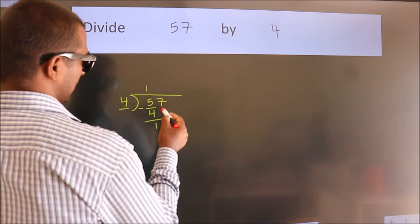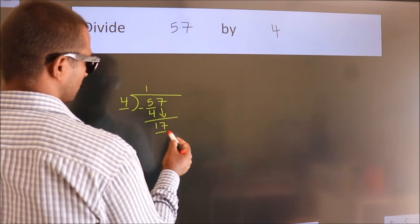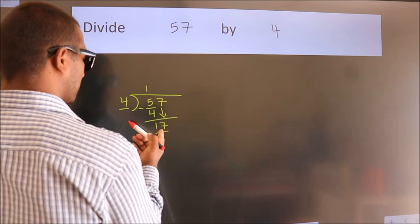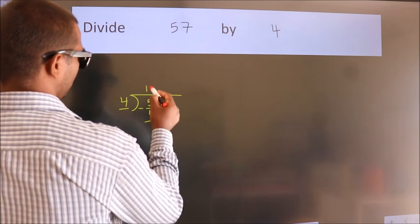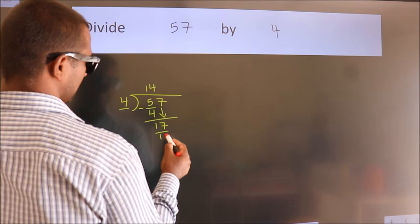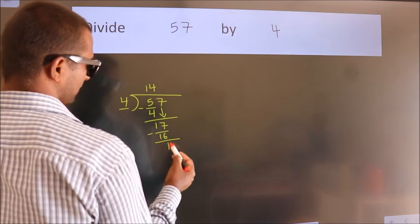After this, bring down the beside number. So 7 down. So 17. A number close to 17 in 4 table is 4 once 4 is 16. Now we subtract. We get 1.